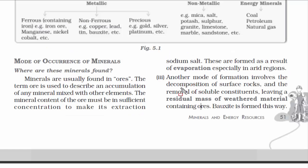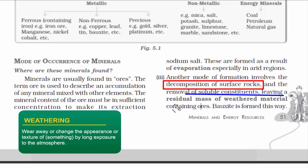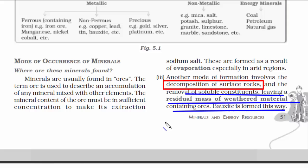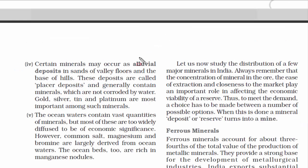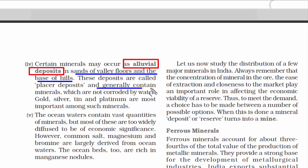Another place where minerals are found is where there is decomposition of surface rocks, which occurs with the help of running water, rainfall, and wind activity. All the soluble content of the rock washes away with water and wind, leaving behind ores. Bauxite is extracted this way. The fourth place where minerals are found is soil. Alluvial soil has a lot of minerals, especially in regions of valley flows and at the base of hills. Gold, silver, tin and platinum are the most important among such minerals.